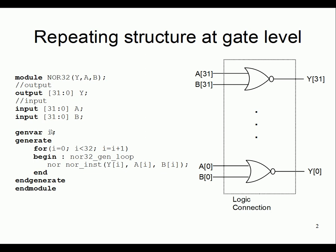Here is the trick: it uses this named loop label and the genvar value of i to create a unique instance name. The generate block creates 32 instances of NOR with the specific port connections. Instead of writing 32 instantiation sentences, we manage it in just a couple of lines using the generate block, the generation variable, and begin/end with a named block and one instantiation template.